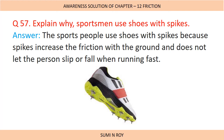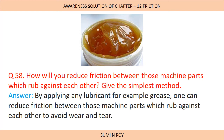Next question: Explain why sportsmen use shoes with spikes. Sports people use shoes with spikes because spikes increase friction with the ground and do not let the person slip or fall when running fast. Because of that, sportspeople use spiked shoes — the spikes increase the grip with the ground so they can run fast without the danger of falling. Next question: How will you reduce friction between machine parts which rub against each other? By applying a lubricant such as grease, one can reduce friction between those machine parts to avoid wear and tear.